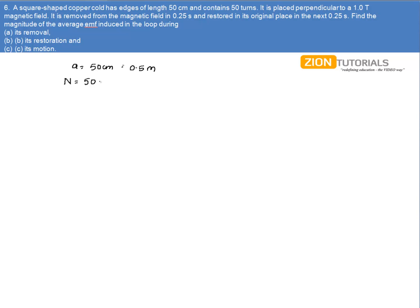It is placed perpendicular to a magnetic field of one tesla. Now, what we have to calculate is the average EMF during first case during its removal.